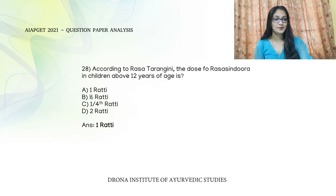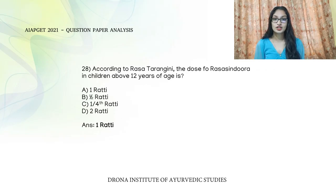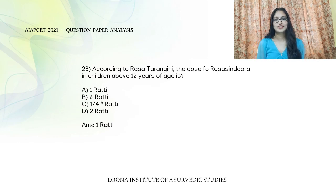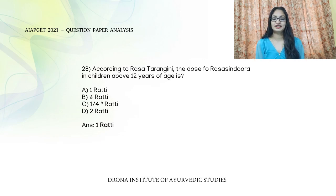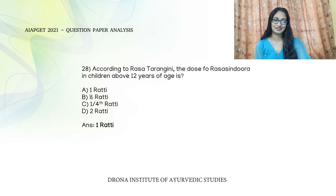According to Rasashastra Samukchya, the dose is age-dependent: at 1 year — 1/16th Ratti; at 6 years — 1/3rd Ratti; at 12 years — half Ratti; above 12 years — 1 Ratti. So the answer is 1 Ratti.